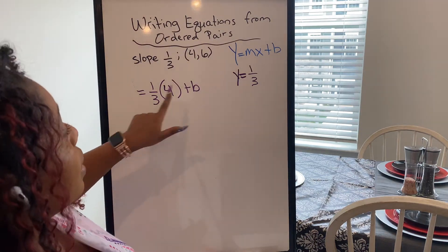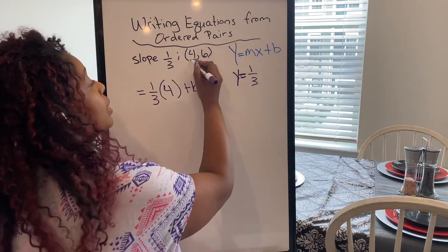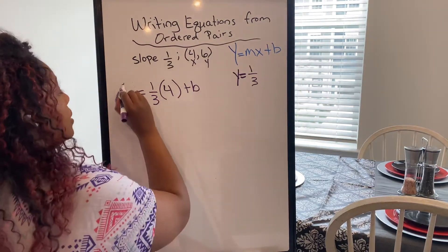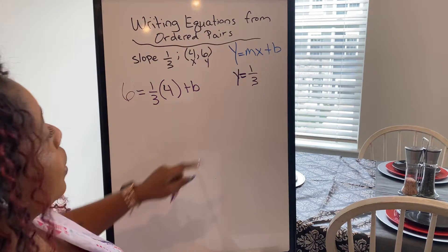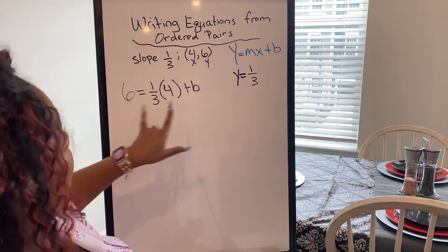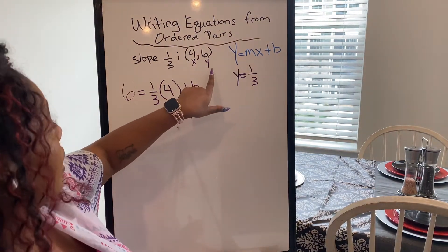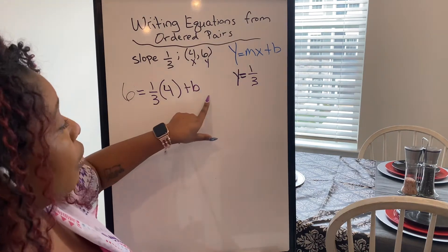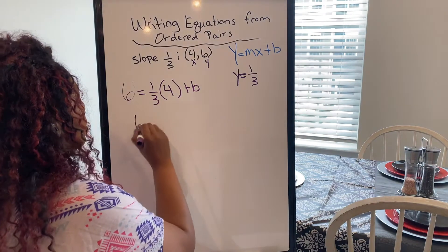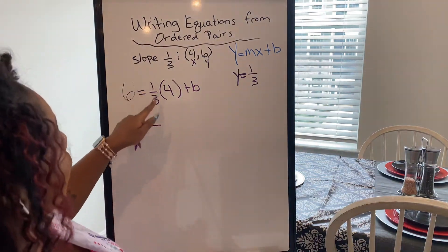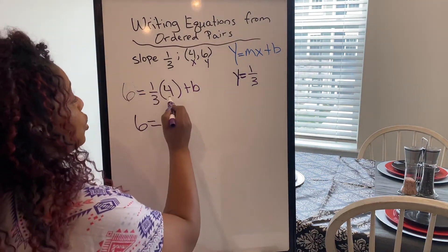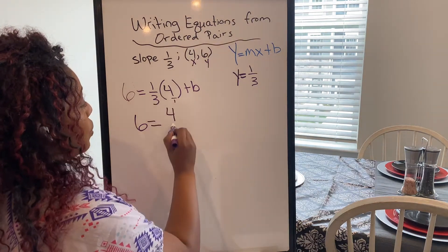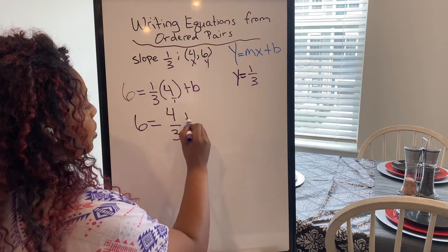What is my y value? Remember, this is my x and this is my y. My y value is six. So I put in what I know — I know that my y is six and I know that my x is four. So I'm going to solve for my missing variable. One third times four — you just pretend and put a one under there. Four times one is four, three times one is three, plus b.